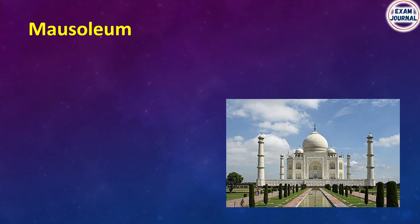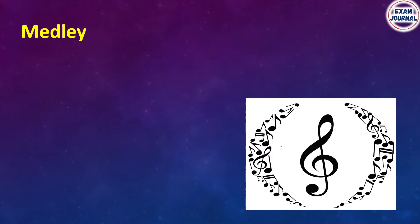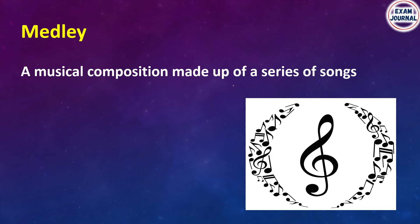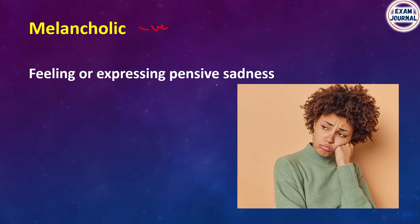Mausoleum. Next: Melancholic. This girl feels very sad and anxious. Melancholic means a feeling of pensive sadness — when you feel a lot of sadness and express it deeply, that is known as melancholic.